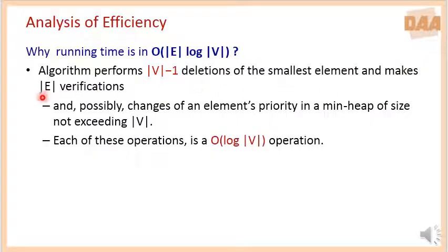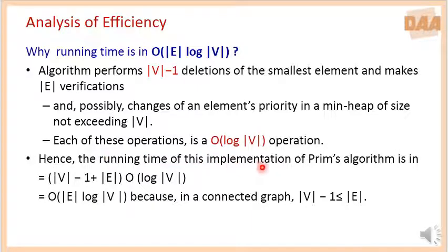At every time, it makes total edges number of verifications. In addition to this, each of these operations in the priority queue to delete the smallest element uses log total vertices number of operations. So all together, the running time of this implementation of Prim's algorithm is total vertices minus 1 plus total edges into O of log total vertices. So as the total vertices minus 1 is less than total edges, the whole expression gets reduced to O of total edges log total vertices.